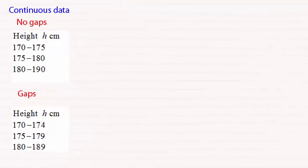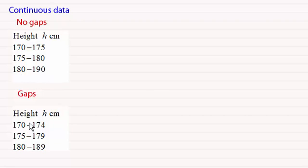Hi there. One of the common questions I get asked when it comes to working with frequency tables is handling notation like this or this. What does it mean? How do we find class widths? How do we find midpoints? We're going to need these values when it comes to working out the mean or standard deviation from a frequency table. That's what I want to address in this video.